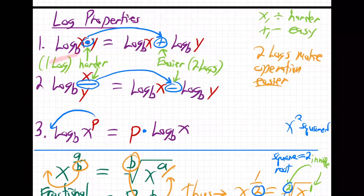They basically say for one log, two logs make the operation easier. It's harder for one. Like if you have something heavy to lift, it's easier for two people than for one. The harder operations, like multiplying and dividing, that's for one log. And adding and subtracting, the easy operations.